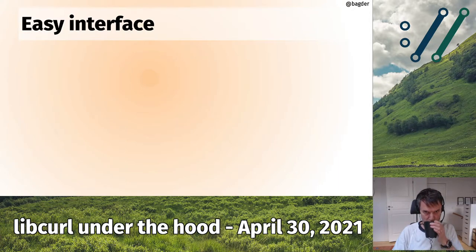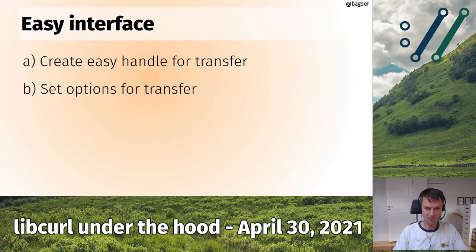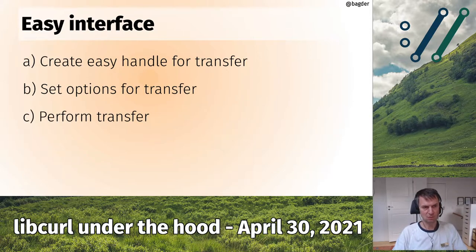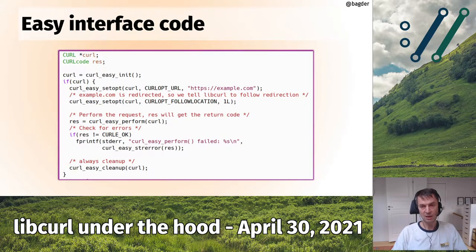The easy interface is called 'easy' because it's simpler and synchronous. The four basic steps are: create an easy handle, set options (URL, timeouts, etc.), call curl_easy_perform to execute the transfer synchronously until done or failed, then clean up the handle.